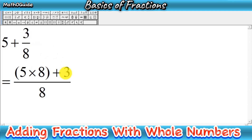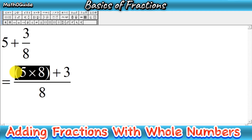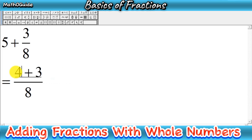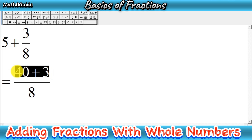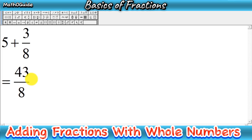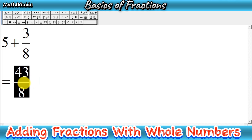Now you can see we have 5 multiplied by 8. 5 times 8 is 40. So you solve it and then add in the numerator: 40 plus 3. We get 43, and this is our simplified answer: 43 over 8.